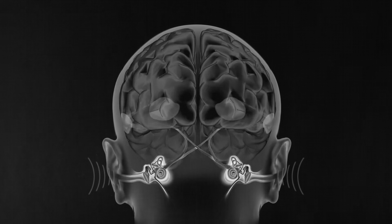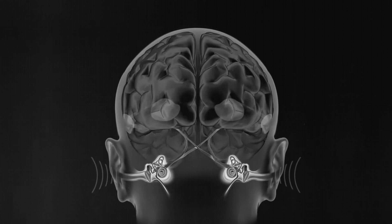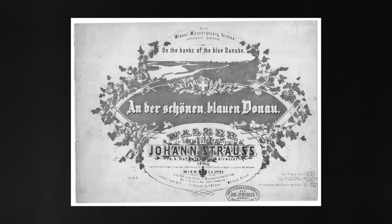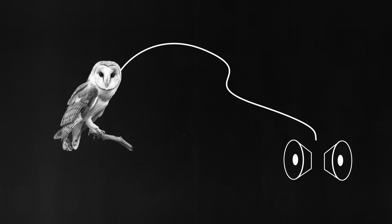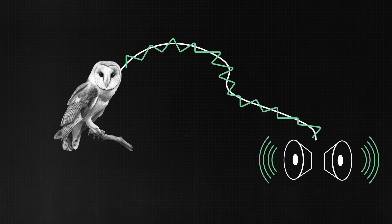Dr. Levitin goes on to talk about how the firing rate of neurons in the brain matches the frequency perceived by the auditory system — when you hear a 100 Hz tone, your auditory neurons fire 100 times per second. He then describes an experiment by Peter Janata, where researchers played a version of Strauss's The Blue Danube Waltz made up of tones with the fundamental frequency removed. They played it for a barn owl, connected electrodes to the owl's inferior colliculus — part of its auditory system — and fed those signals to an amplifier and speaker. When the music played, the electrical signals from the owl's brain, when amplified, played the melody of The Blue Danube Waltz through the speaker. I found this to be mind-blowing.